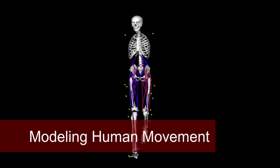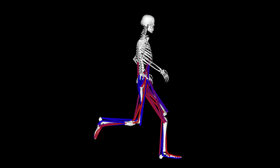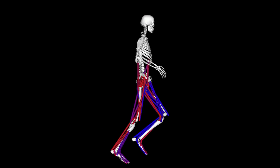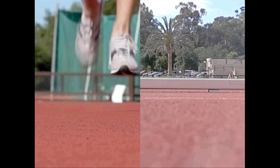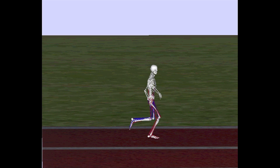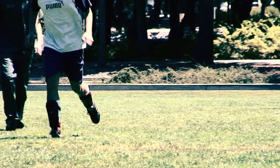OpenSim is a software package that allows you to create models of humans and animals in order to create simulations of how we move. The simulations are powered by muscles, so they're different than movies like Avatar, where those are computer generated but not based on the physics and physiology of how people actually move.